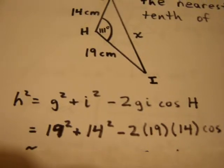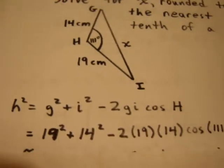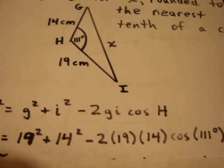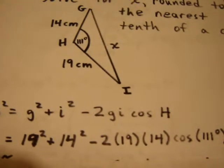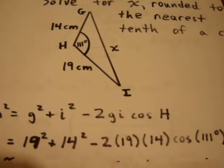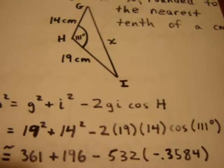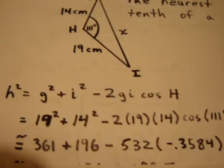Well, that means H squared equals 19 squared plus 14 squared minus 2 times 19 times 14 times the cosine of 111 degrees. Well, the cosine of 111 degrees is approximately equal to negative 0.3584.